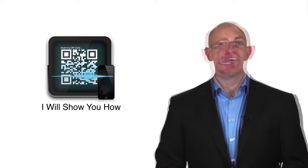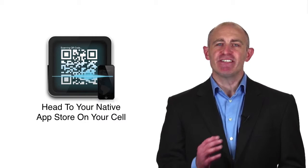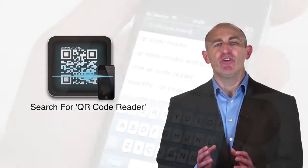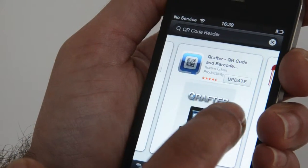I'll show you how. First, you need to install a QR code reader on your phone. Head to your native app store on your cell and search for QR code reader. There are many available. Just pick the one that's right for you.